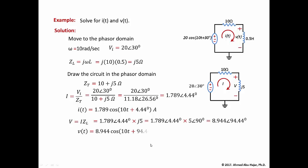Converting the phasor voltage back to the time domain gives V(t) = 8.944 cos(10t + 94.44°) volts, where omega is 10 rad/s.